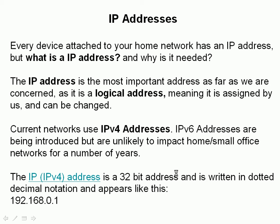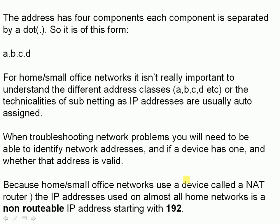Every device attached to your home network has an IP address. The IP address is the most important address as far as we're concerned — it's a logical address, meaning it's assigned by us and can also be changed. Current networks use IPv4 addresses; IPv6 addresses are being introduced but are unlikely to impact small offices and homes for a number of years to come. The IPv4 address is a 32-bit address written in dotted decimal notation, and looks like this: 192.168.0.1. The address has four components each separated by a dot — A.B.C.D. For home and small office networks, it isn't really important to understand IP address classes or the technicalities of subnetting, as IP addresses on home networks are auto-assigned anyway.